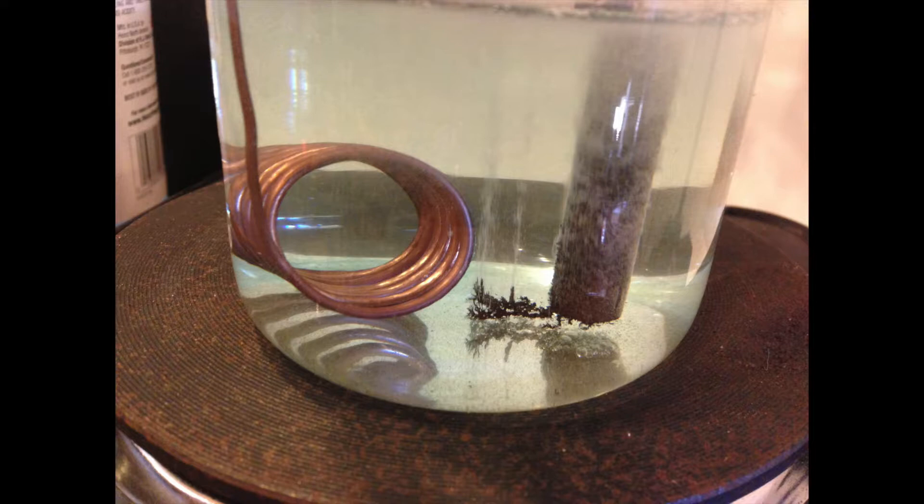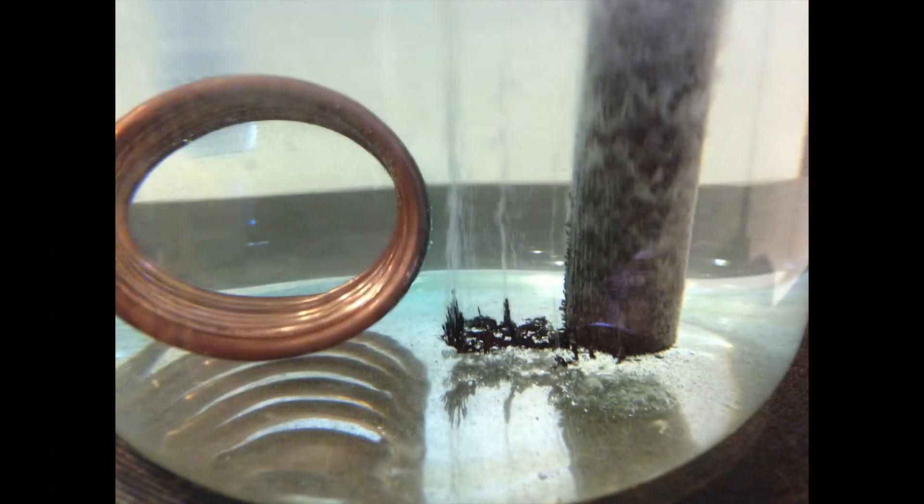And it crawls right out of the carbon rod and across the bottom of the beaker, and it travels directly towards the copper coil. Here you can see the vinegar just barely start to turn blue. And I'm making a lot of hydrogen.